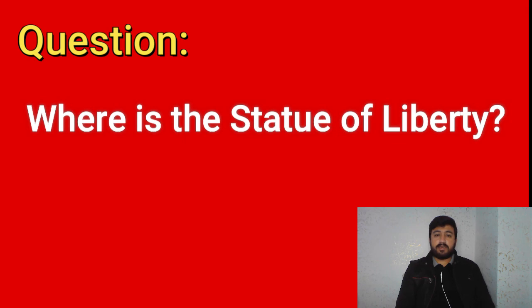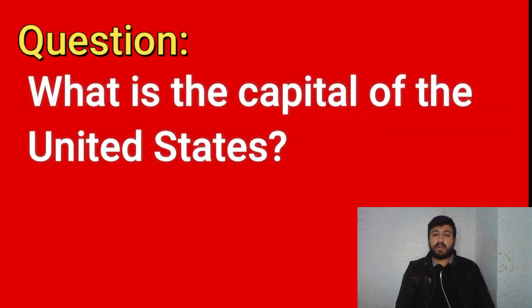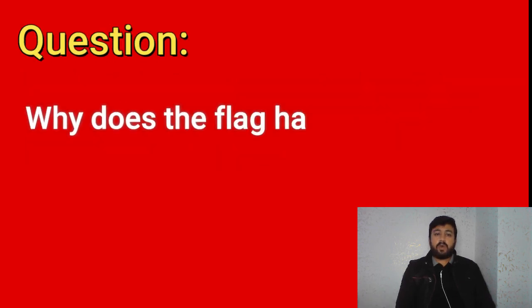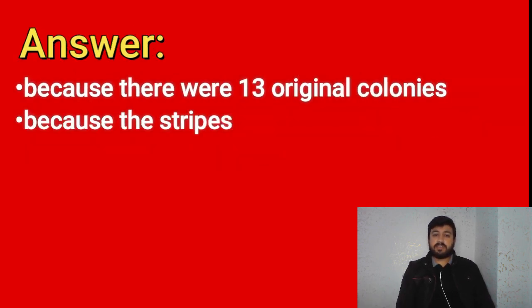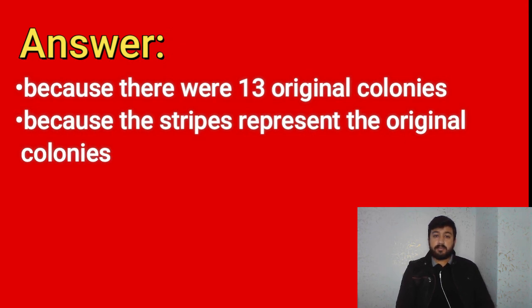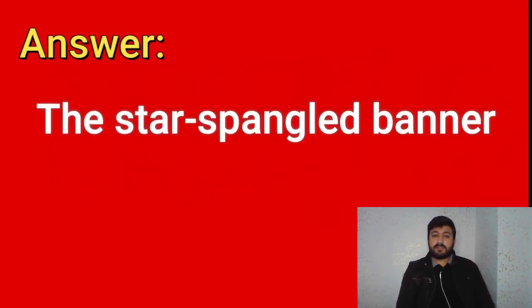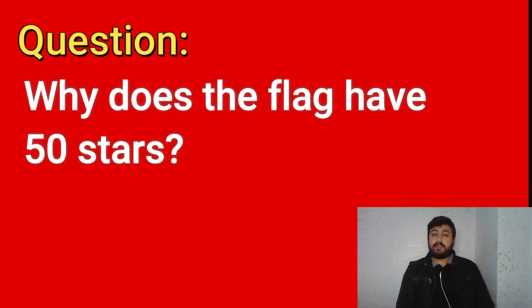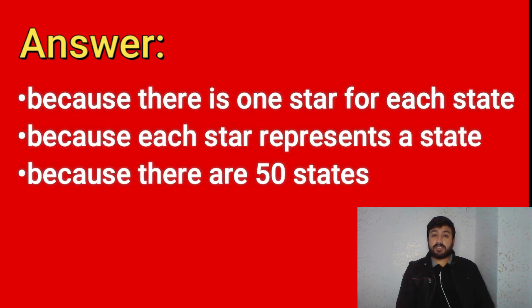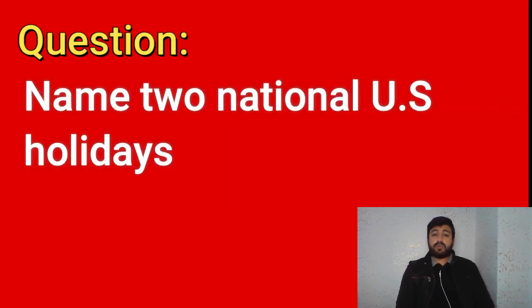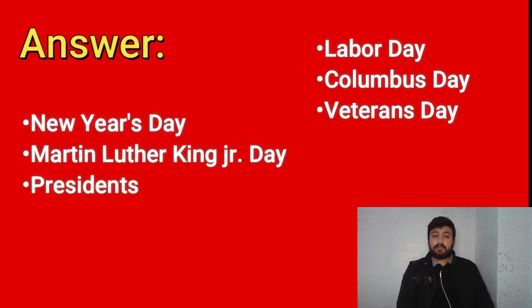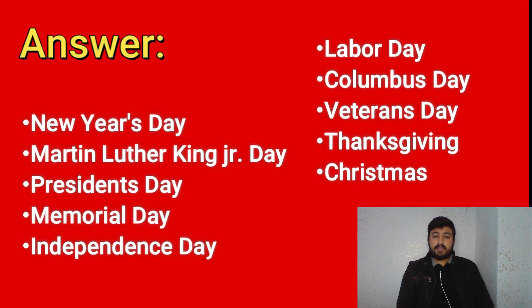What is the capital of the United States? Washington, D.C. Why does the flag have 13 stripes? Because there were 13 original colonies — these stripes represent the original colonies. What is the name of the national anthem? The Star-Spangled Banner. Why does the flag have 50 stars? Because there is one star for each state, because each star represents a state, because there are 50 states. Name two national U.S. holidays: New Year's Day, Martin Luther King Jr. Day, Presidents' Day, Memorial Day, Independence Day, Labor Day, Columbus Day, Veterans Day, Thanksgiving, Christmas.